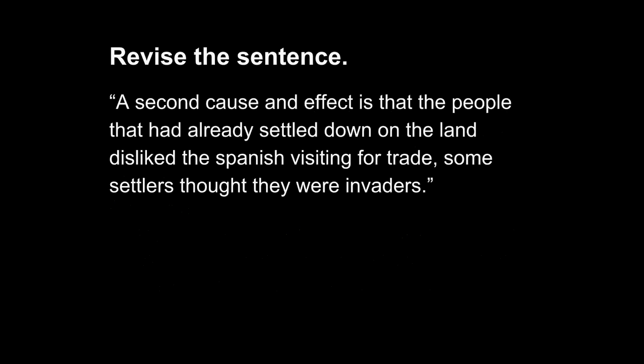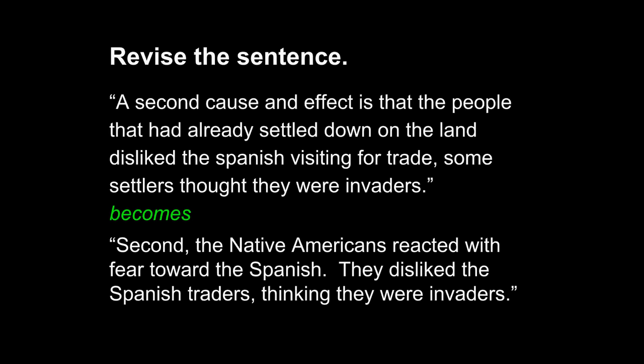We can practice the same revision strategy on the next sentence: A second cause and effect is that the people that had already settled down on the land disliked the Spanish visiting for trade. Some settlers thought they were invaders. This sentence becomes: Second, the Native Americans reacted with fear toward the Spanish. They disliked the Spanish traders, thinking they were invaders. Transition word and strong subject — 'Second, the Native Americans reacted with fear' — is a very strong effect sentence. The transition word 'second' indicates its sequence in the paragraph, and my cause and effect writing is clear.